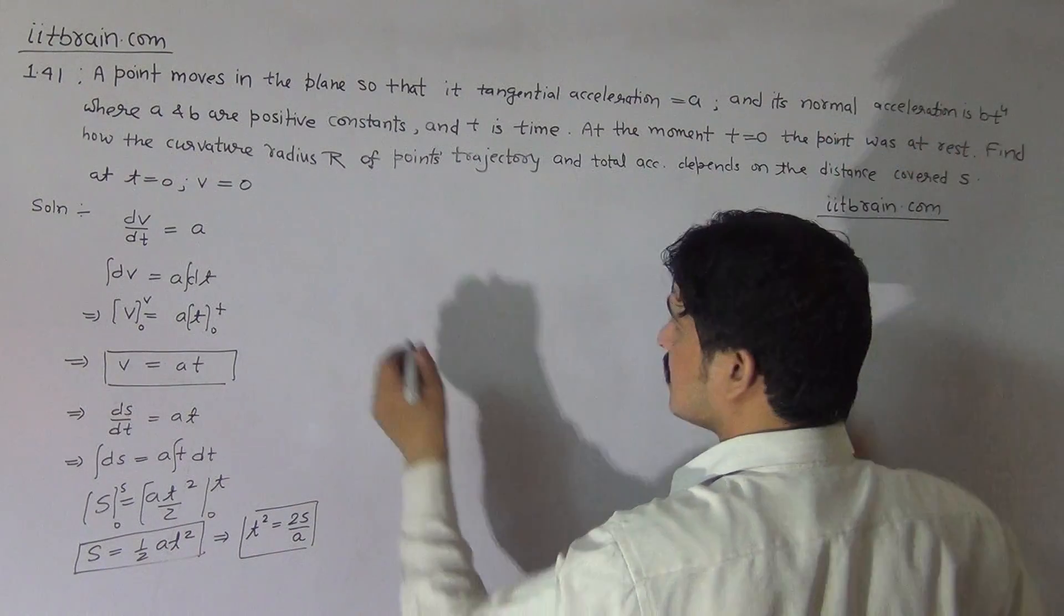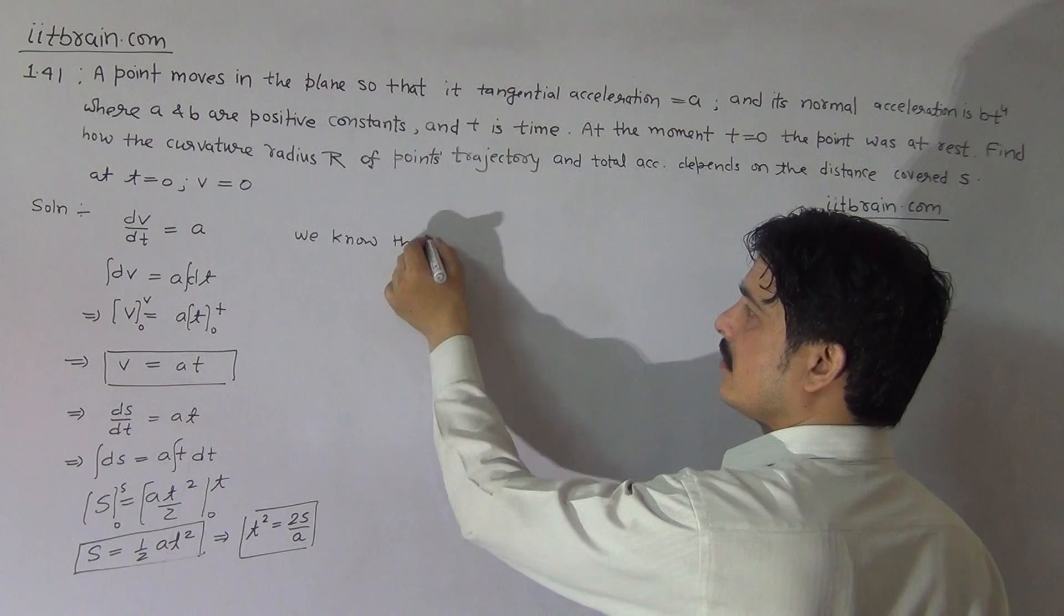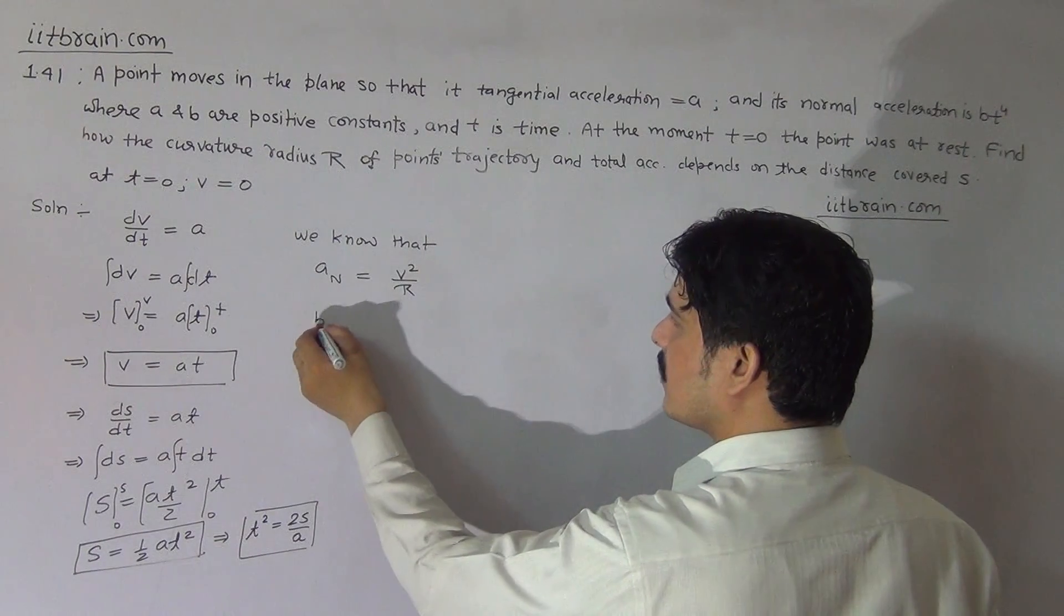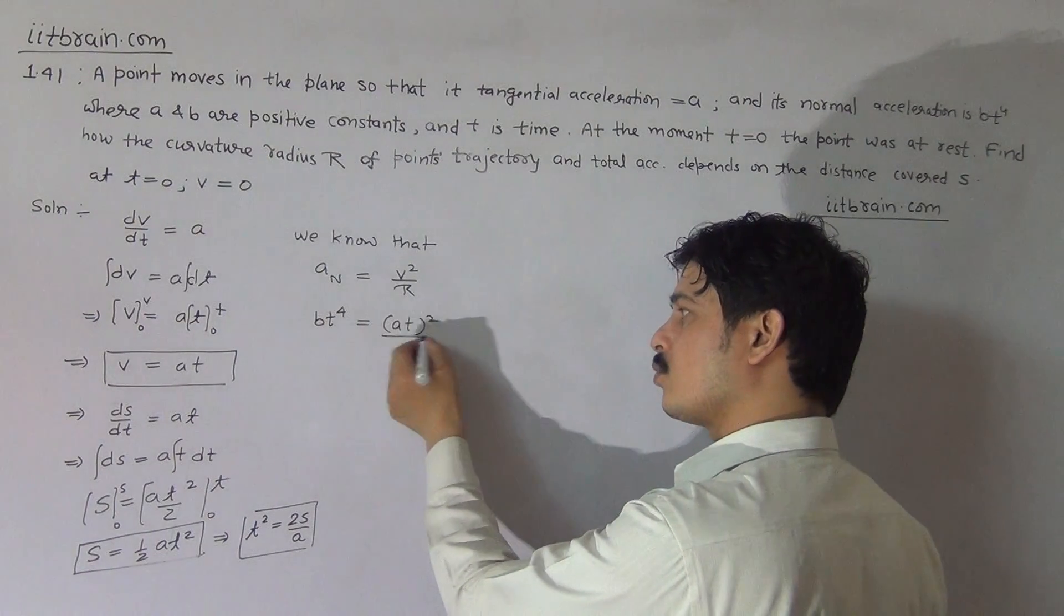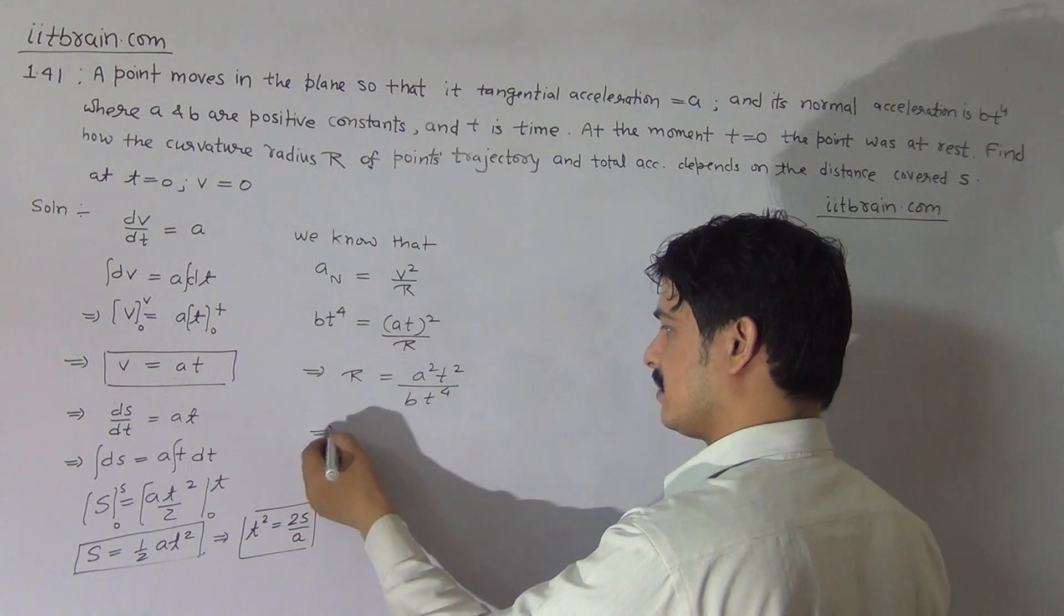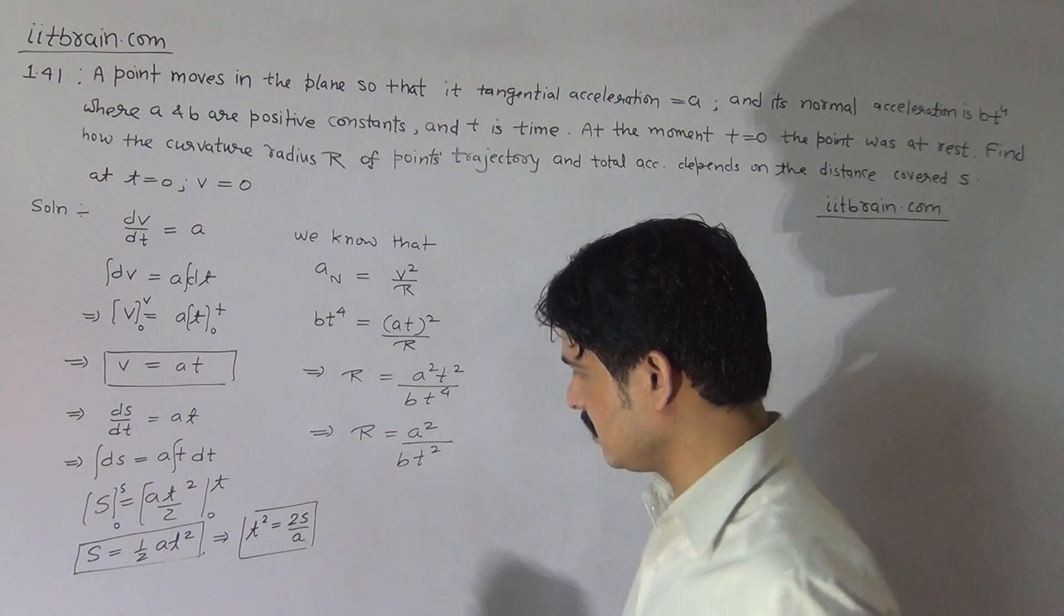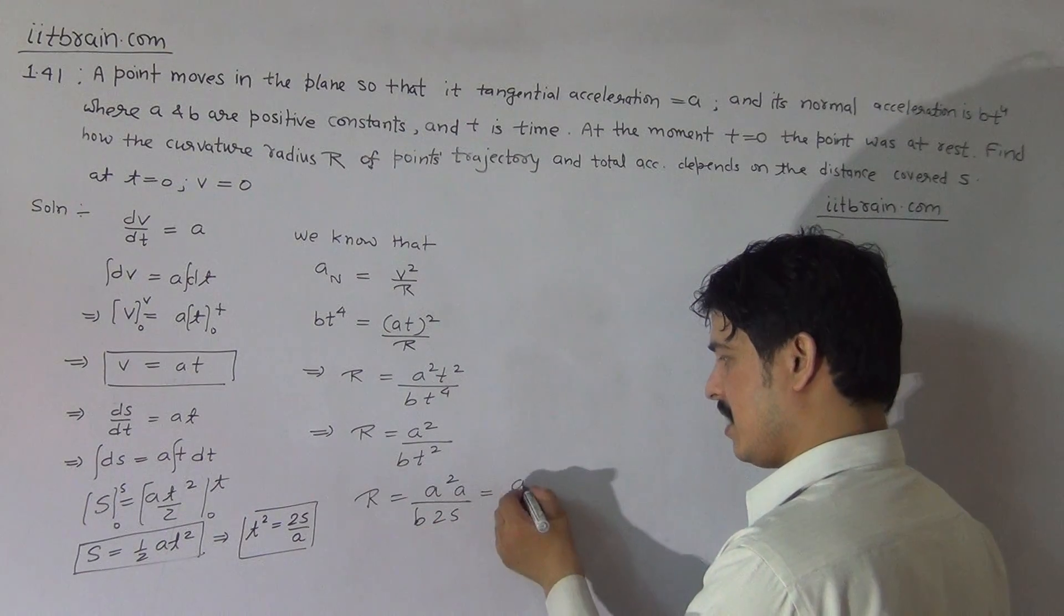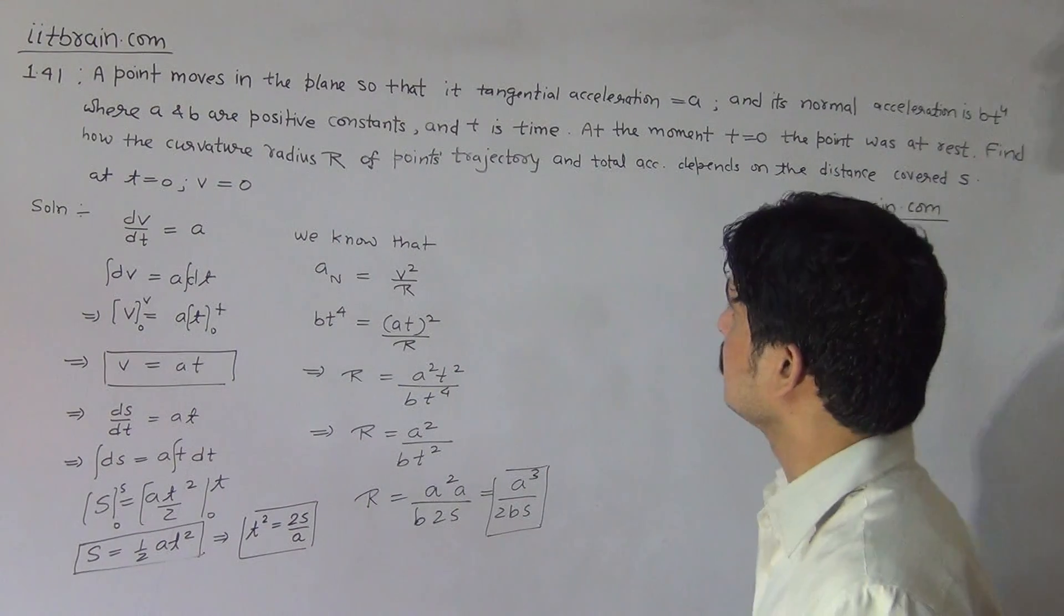Now second condition, the normal acceleration is Bt to the power 4. We know that normal acceleration is V square by R. The value of normal acceleration is given as Bt to the power 4, and velocity is At. So At square by R equals Bt to the power 4. Radius of curvature will become A square t square by Bt to the power 4, which is A square by Bt square. T square is 2S by A, so putting the value, we get A cube by 2BS. This is the value of radius of curvature in terms of distance.